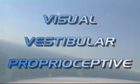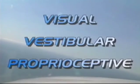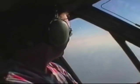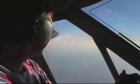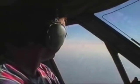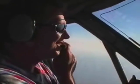Spatial disorientation is the loss of your orientation in relation to the Earth's surface, caused mainly by a lack of and/or misinterpretation of visual, vestibular, or proprioceptive sensory inputs to the brain. Spatial orientation during flight requires an understanding of your sensory organs and knowing how you can compensate for their limitations.